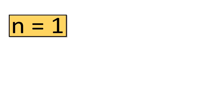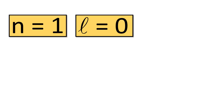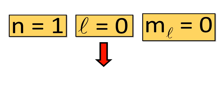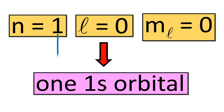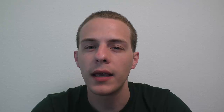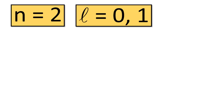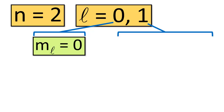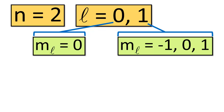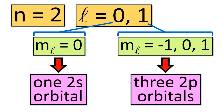We can see how these quantum numbers work together by looking at the orbital where n = 1, l = 0, and the only possible value of m sub l is 0. This orbital is called the 1s orbital — the 1 comes from the principal quantum number, and s is the letter assigned to l = 0. There is only one 1s orbital because there's only one possible value of the magnetic quantum number. It gets more complicated when n = 2: l can be 0 or 1. Where l = 0, m sub l can only be 0, giving one 2s orbital. Where l = 1, m sub l can be −1, 0, or +1, giving three 2p orbitals.